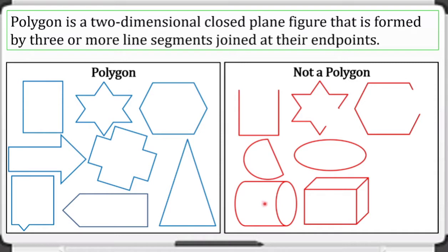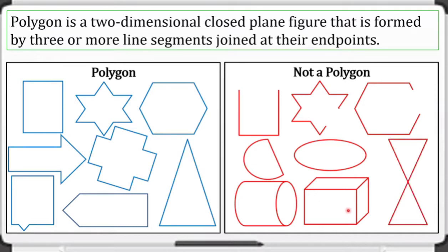These two figures are also closed figures and yes they have straight line segments, but they are not two-dimensional — they are three-dimensional. They have length, width, and height, making these two figures not a polygon.